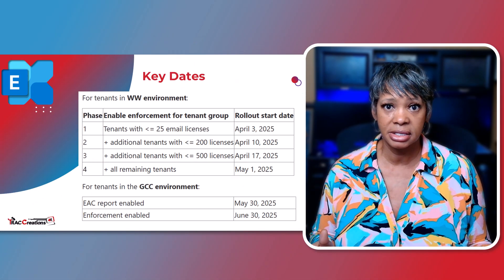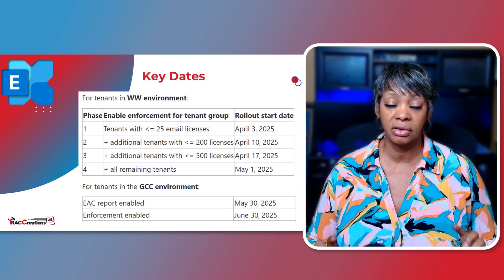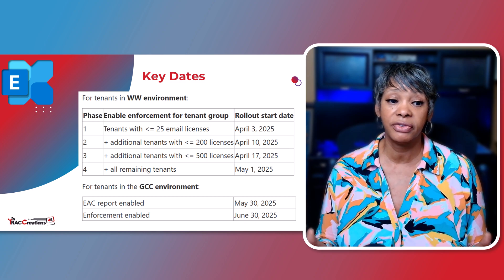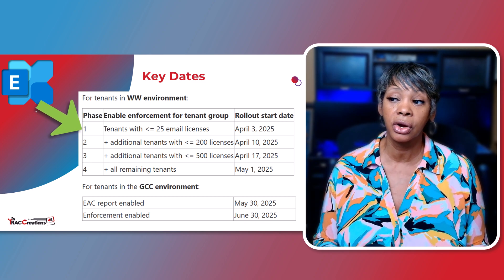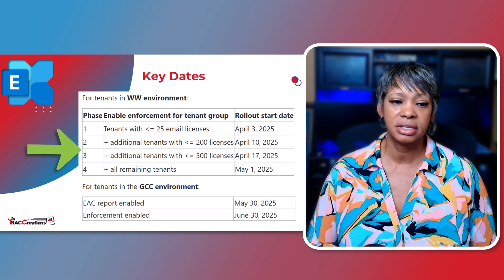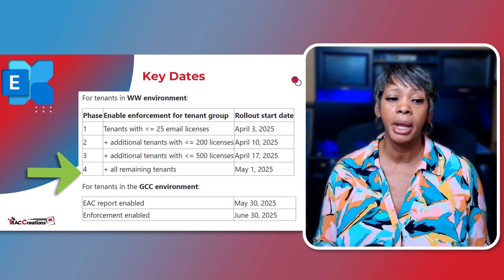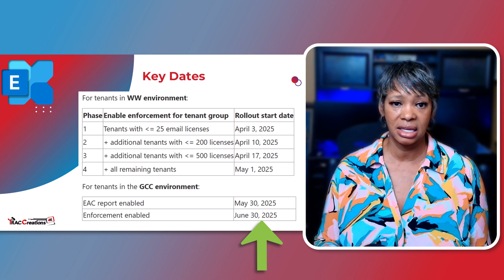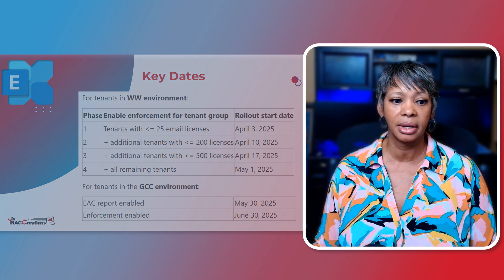Here are the key dates. Microsoft plans to roll this out gradually. If you have purchased under 25 licenses, it is effective starting April 3rd. They will roll it out to another group each week, and it should wrap up by the end of June — so this is happening pretty quickly.